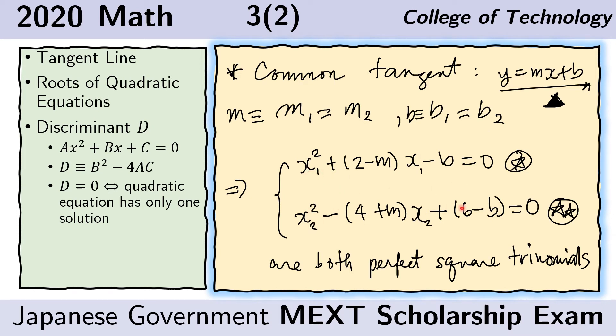Here, we rewrite the equations we obtained from the previous slides. This bit is from the equation from C sub 1 and here is the equation from C sub 2. Now, we have to impose that both of these must be perfect square trinomials. In other words, this equation must have only one solution and this equation must have only one solution.